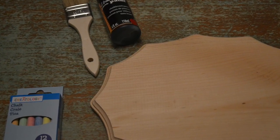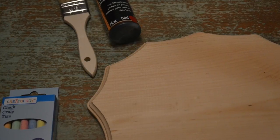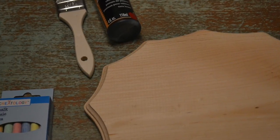So the first thing we're going to make is a wooden plaque sign. You will need a wooden plaque, chalkboard paint, chalk, and a paintbrush.